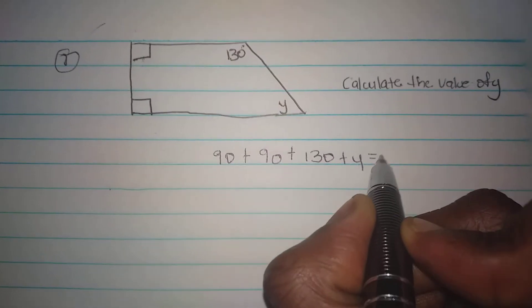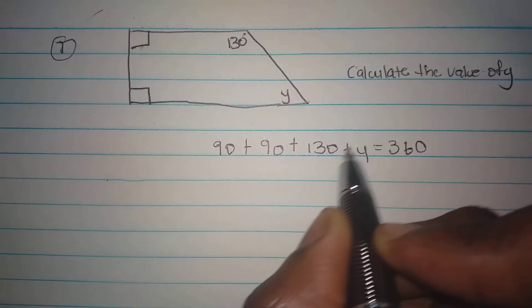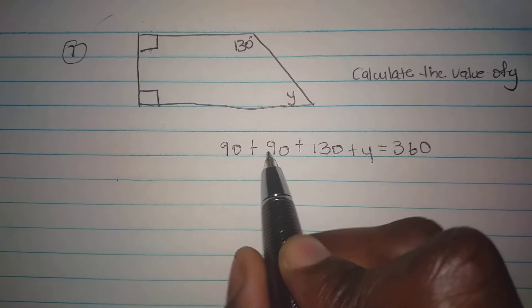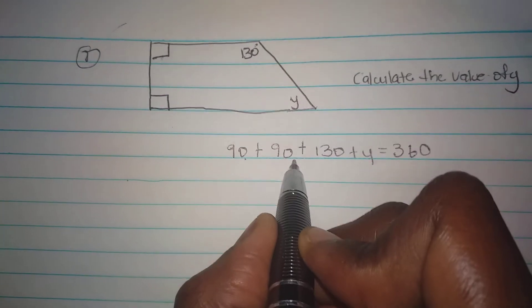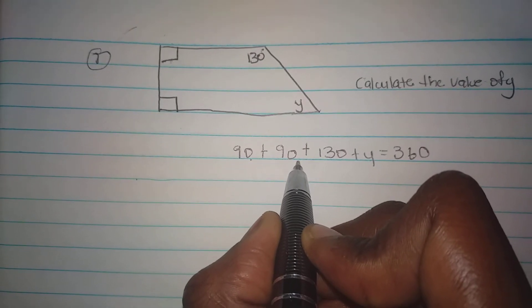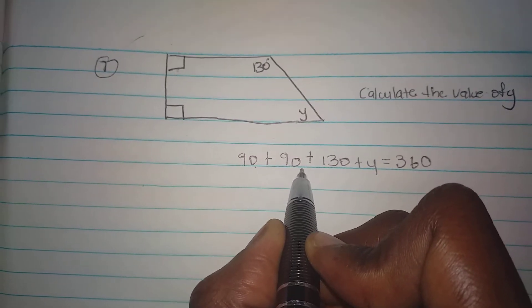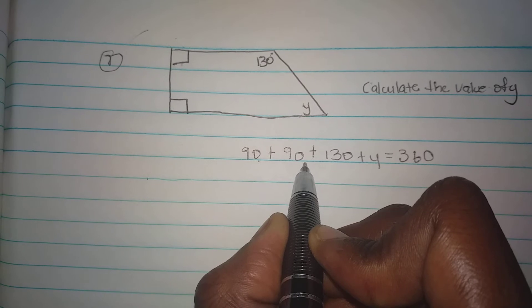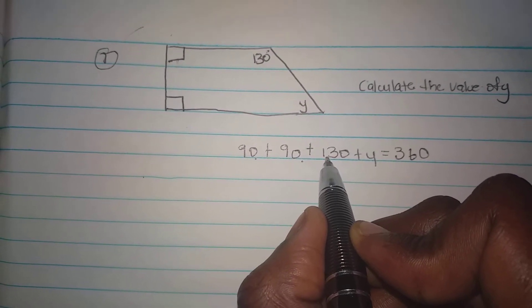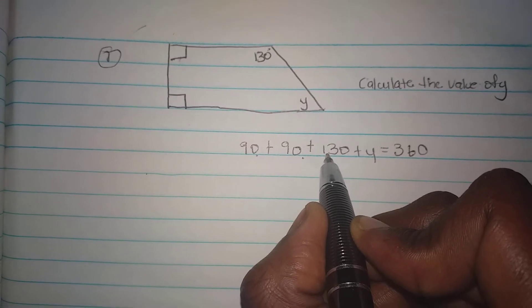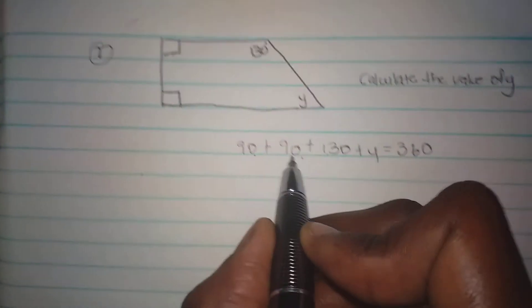So 90 plus 90 would give me 180. 180 plus 100 would give me 280. 280 plus 30 would give me 310.